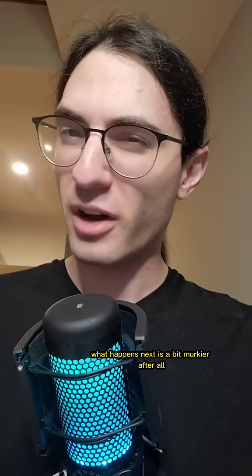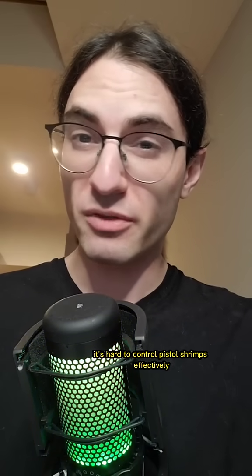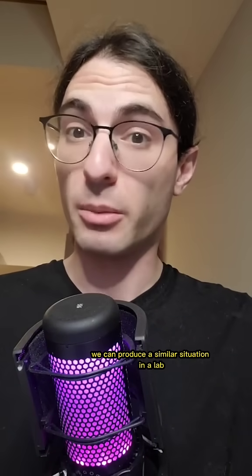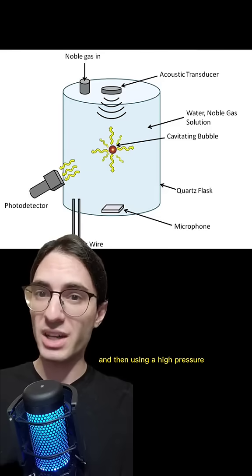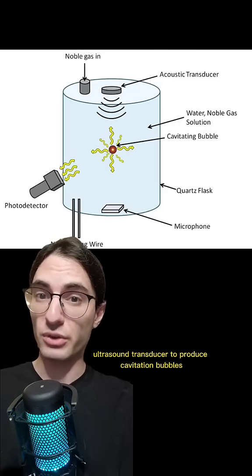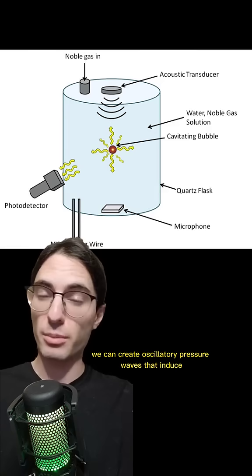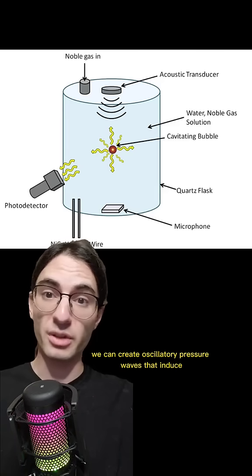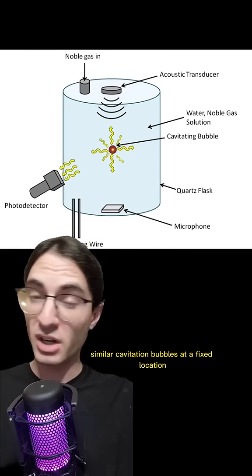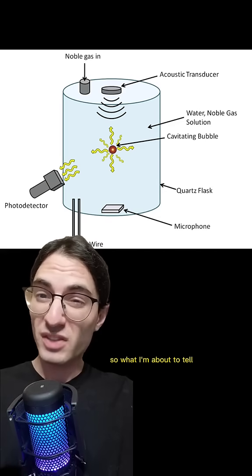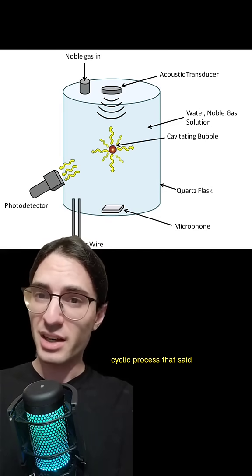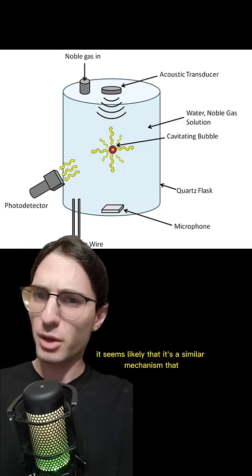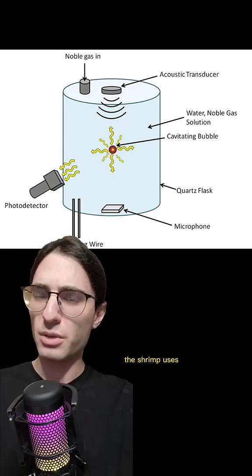What happens next is a bit murkier. After all, it's hard to control pistol shrimps effectively to run experiments. Fortunately, we can produce a similar situation in a lab. By filling a jar with water and then using a high-pressure ultrasound transducer to produce cavitation bubbles, we can create oscillatory pressure waves that induce similar cavitation bubbles at a fixed location over and over again. So what I'm about to tell you is what happens in an example of that cyclic process. That said, it seems likely that it's a similar mechanism that the shrimp uses.